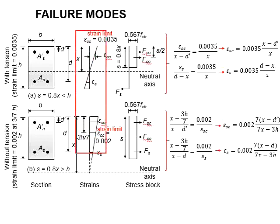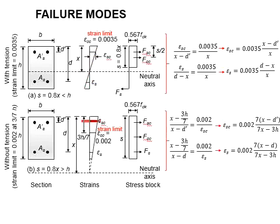With these strength limits, it is easy to determine the strength in the compression and tension steel for both cases. This stands on the assumption that the strength relationship is linear throughout the cross-section.